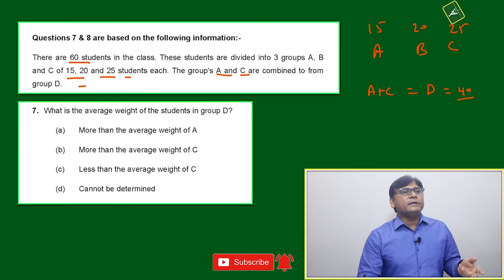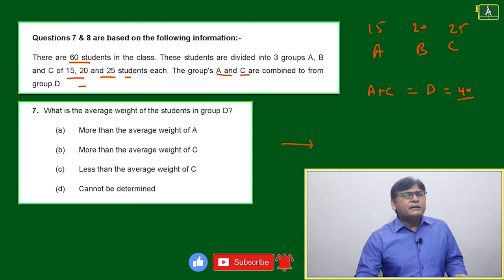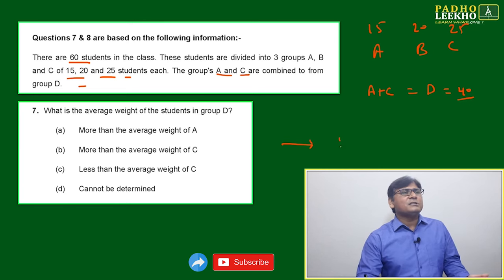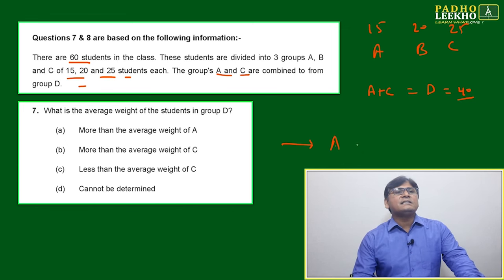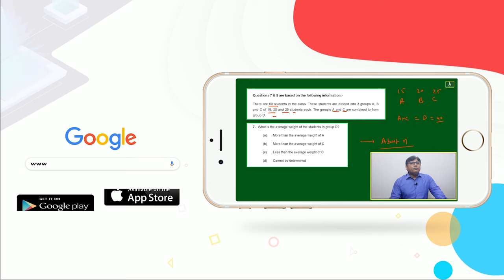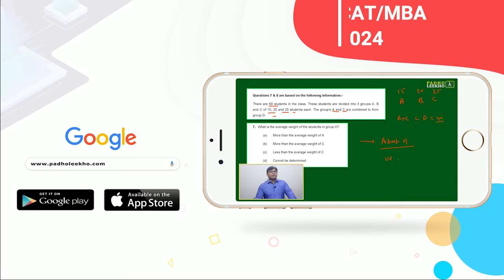About the weight, nothing has been given. Information only given about number of students - only n we have here. About weight, nothing has been given. You have no weight information. Anywhere it is not given. Then how will we decide the average weight if it is not mentioned?